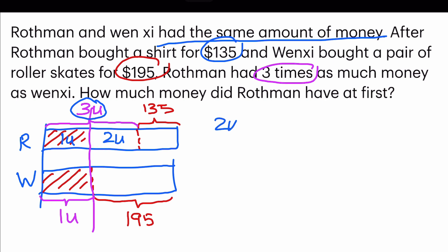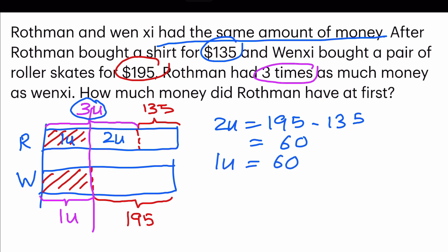So two units is equal to $195 minus $135, which gives us $60. And the moment I found two units, I can go ahead to find one unit, which is $60 divided by two — I get $30.